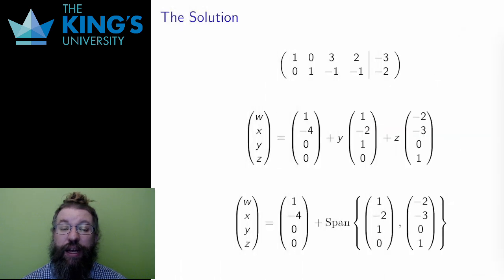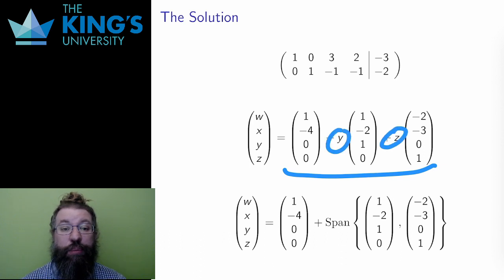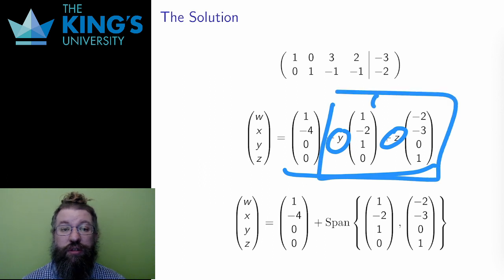Then I take this and I write the solution in terms of the parameters. I'll skip the steps that I showed last week, but the end solution written as a vector is this. y and z are free parameters. And since y and z are free, the second part of this equation is just a linear combination of the two vectors. That's just a span. So I can actually write this as an offset span.